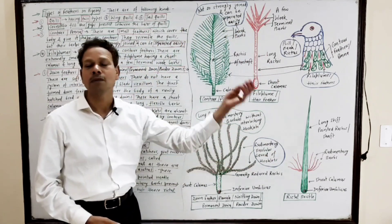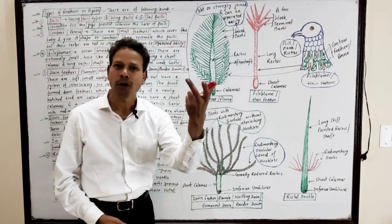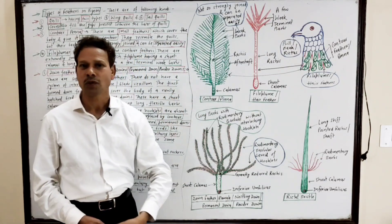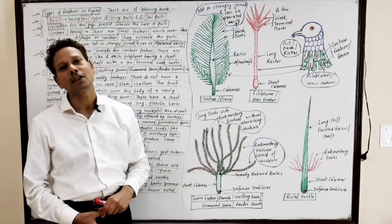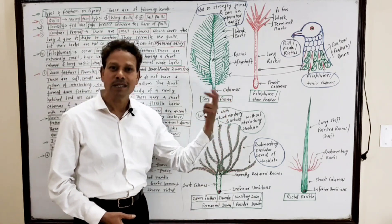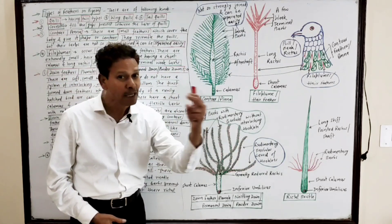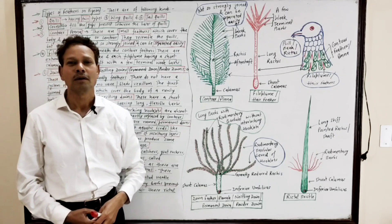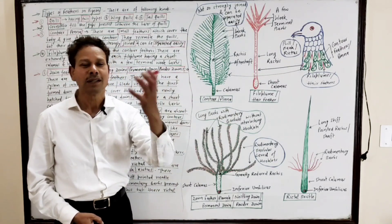To summarize the different types of feathers in birds and in pigeons: the important type is quills — present on wings and tail — of two types: wing quills or remiges, and tail quills or rectrices. The second type is coverts, which fill the gaps between the bases of wing quills and tail quills to produce a continuous area to oppose the buoyancy of air.